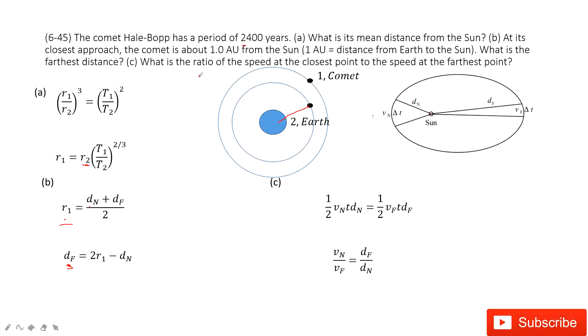The next one asks you to find the ratio of speed for the nearest point to the farthest point. So this one we consider Kepler's second law. Kepler's second law tells us at a certain time, if we just connect this line from the Sun to the comet, this area should equal to this area. Do you agree?